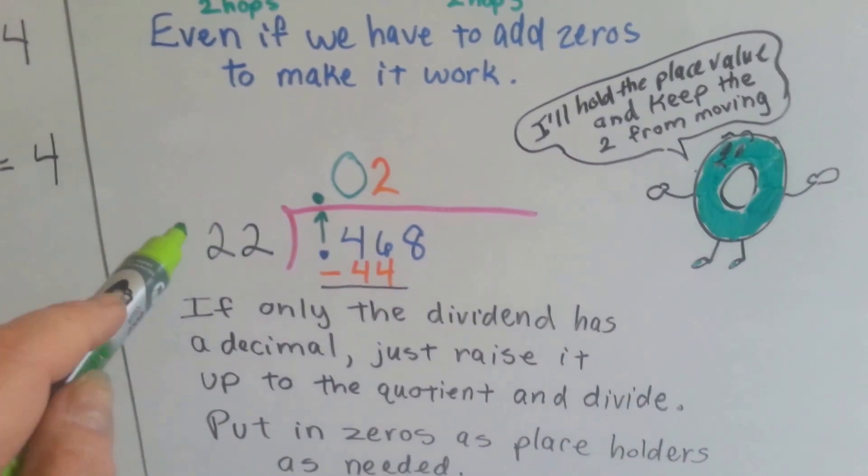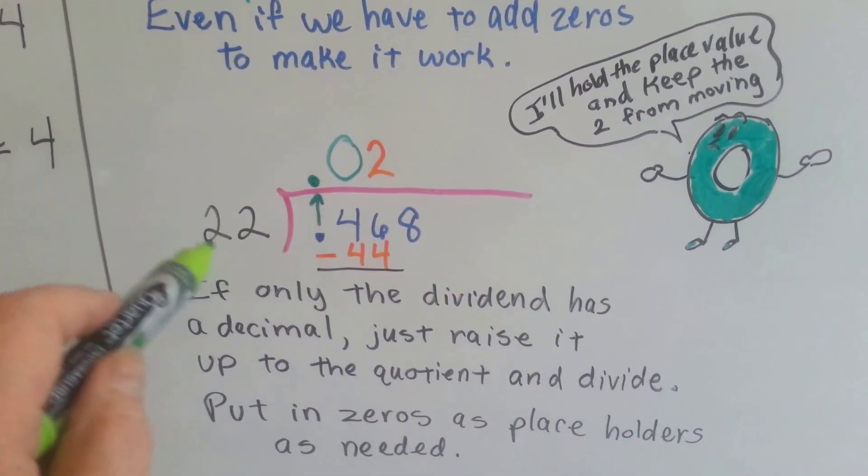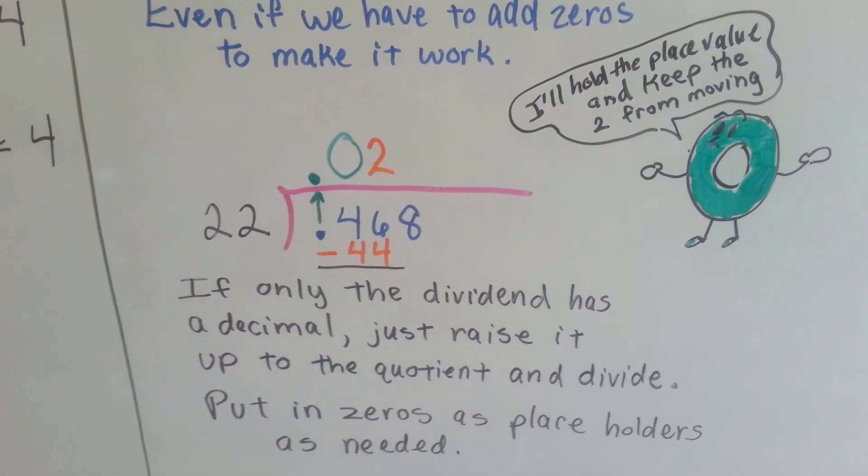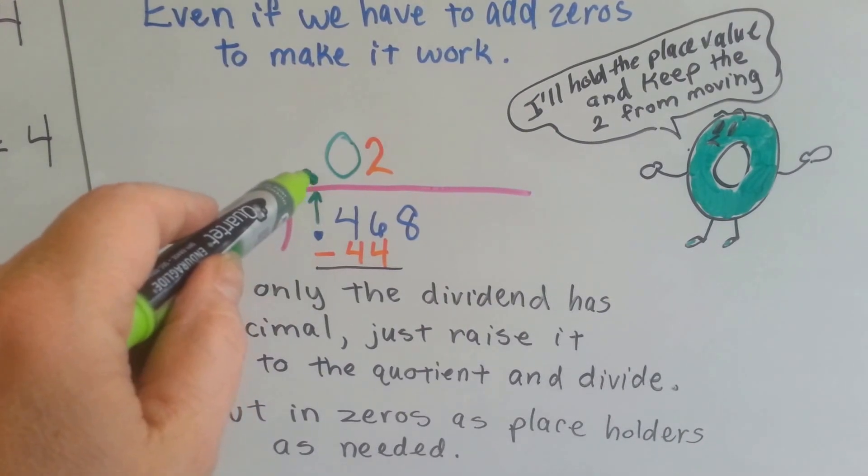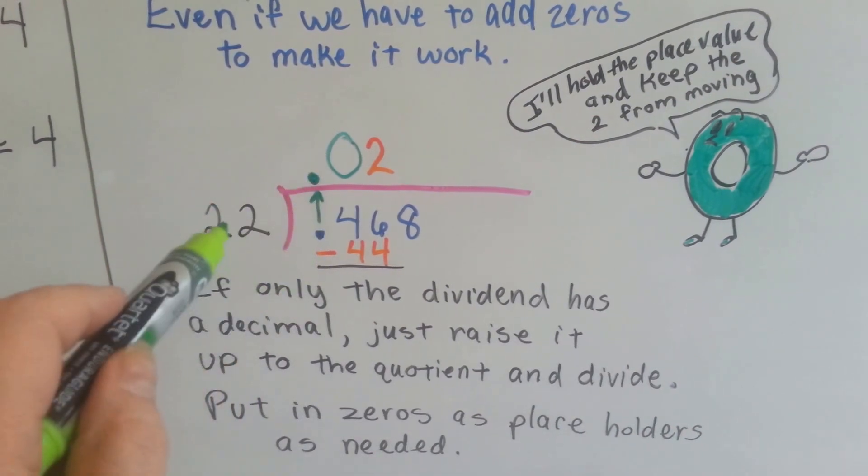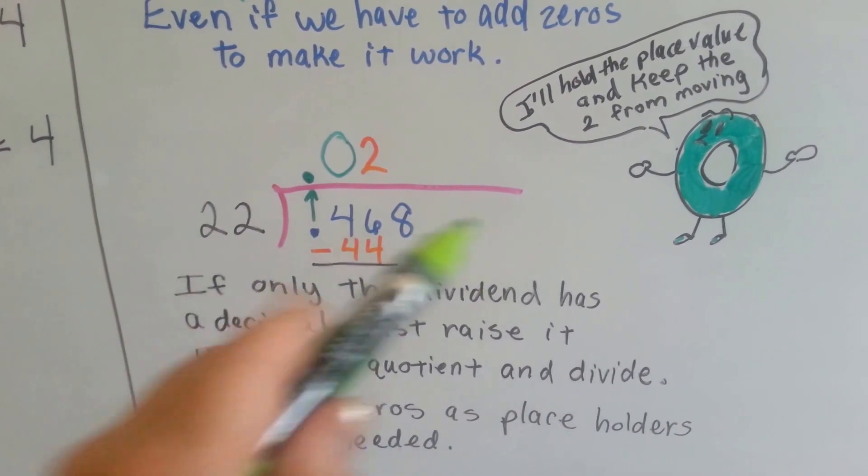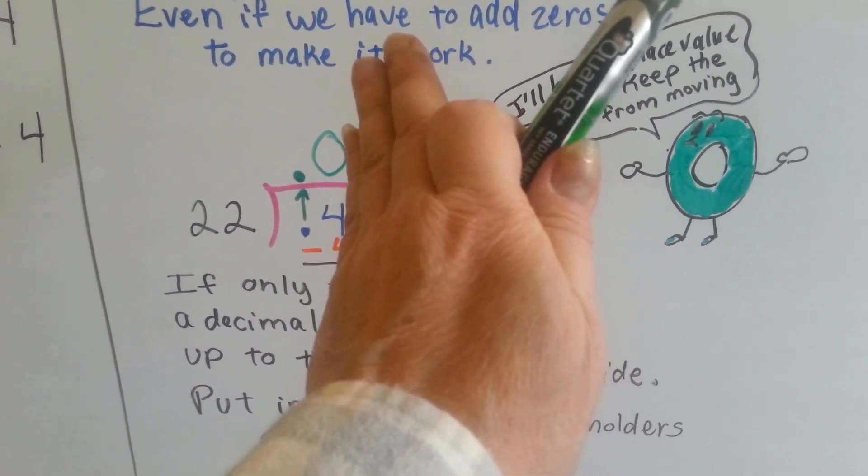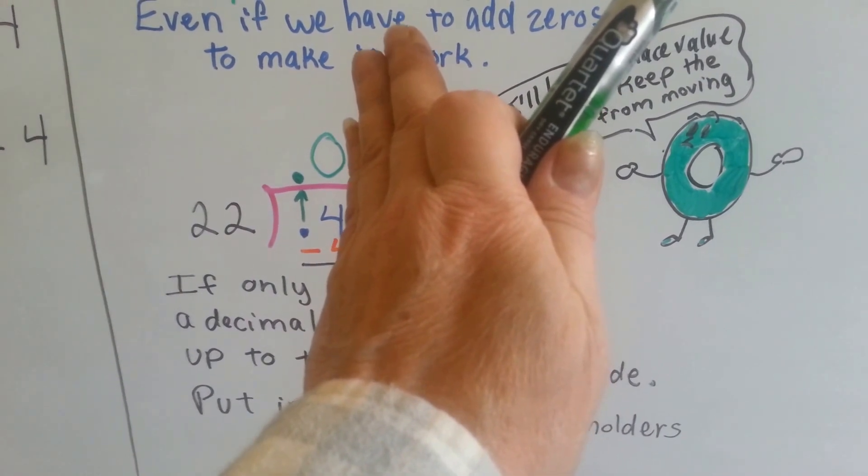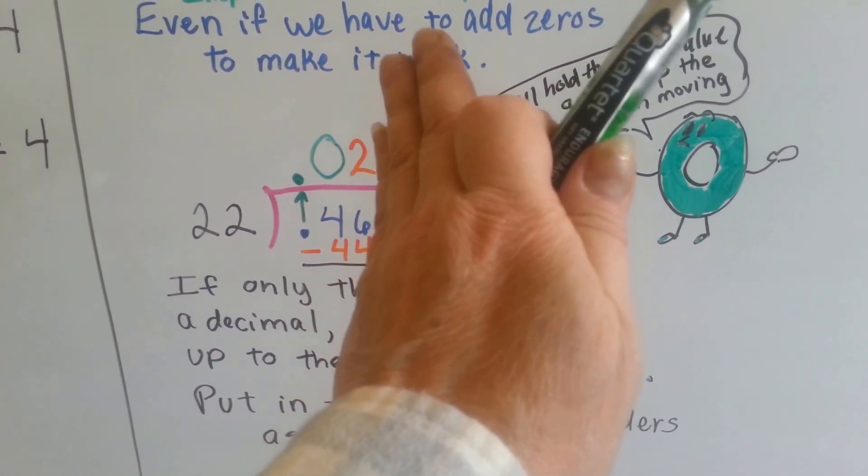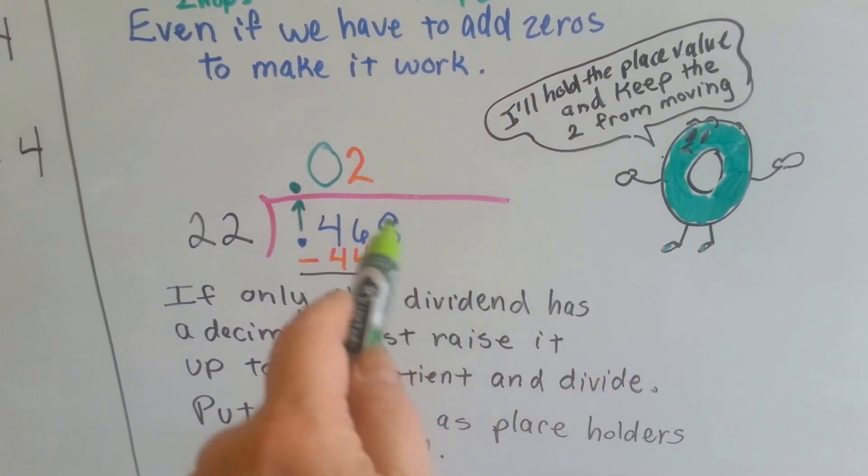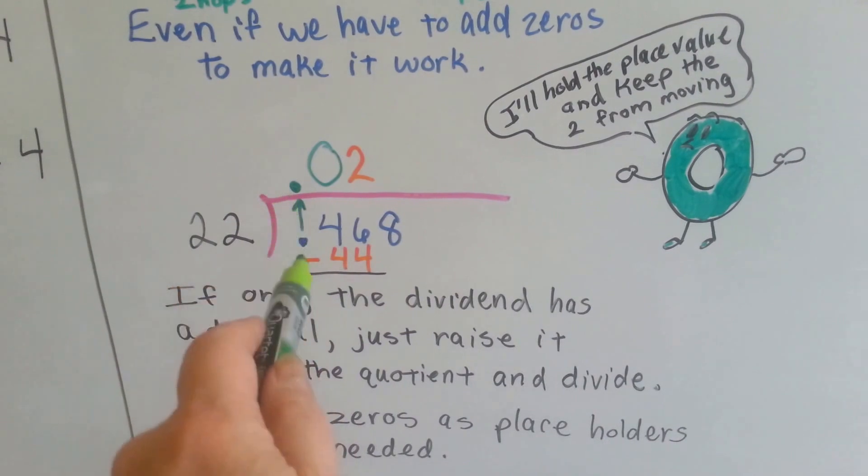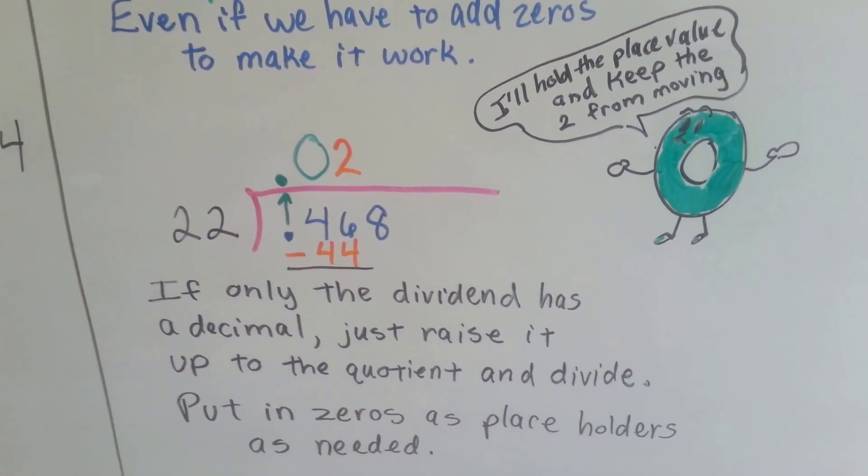What happens if there's no decimal point in the divisor, but there is one in the dividend? Well then we just leave it alone and we just bring that decimal point straight up. But if we've got something like 22 which can't go into 4, we put a zero there, see, to hold the place because we're going to put 22 into 46 two times.